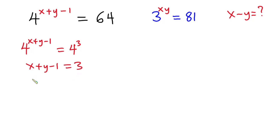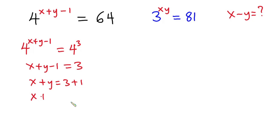Making x plus y the subject, we have x plus y is equal to 3 plus 1, and this implies that x plus y is equal to 4. Now moving on to the second equation, we have 3 to the power xy.